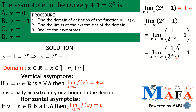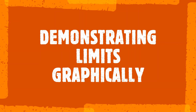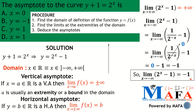As x tends to minus infinity, negative x tends to plus infinity, so two raised to the power of that tends to plus infinity. Your denominator becomes a very large number, and one divided by a very large number tends to zero. So two raised to the power x tends to zero, and the full expression gives zero minus one, which equals negative one. The limit as x tends to minus infinity of our function is negative one.